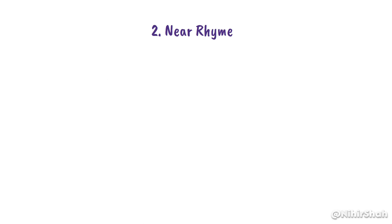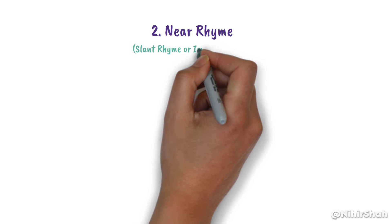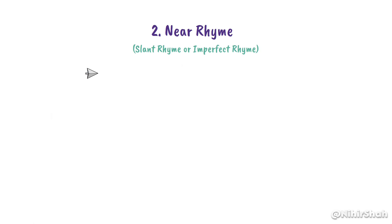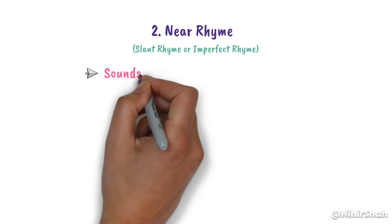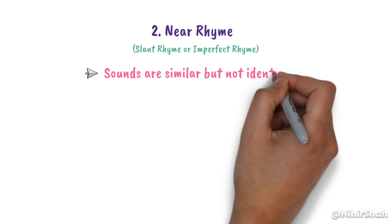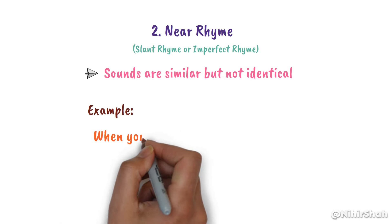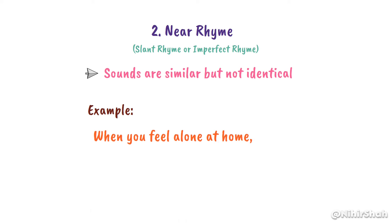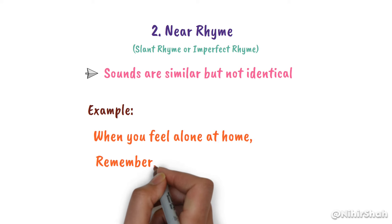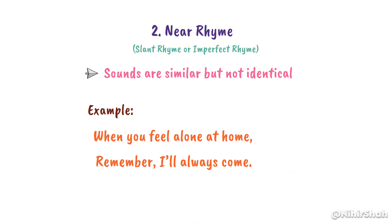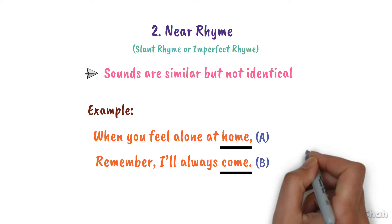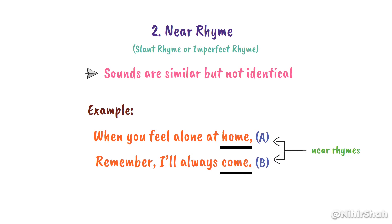Number 2, Near Rhyme, also called Slant Rhyme or Imperfect Rhyme. Here, the sounds are similar but not identical. For example: 'When you feel alone at home, remember, I will always come.' In this example, 'home' and 'come' are near rhymes because they do not match exactly but sound similar.